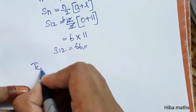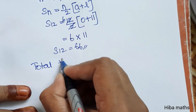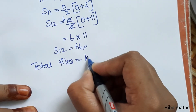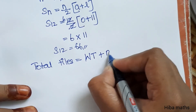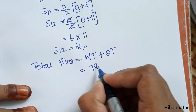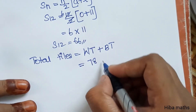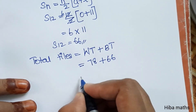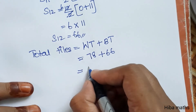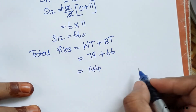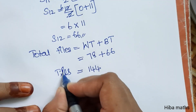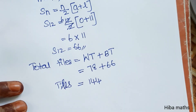Total tiles equals white tiles plus blue tiles. White tiles is 78, blue tiles is 66, so total is 144 tiles. Thank you so much for watching.